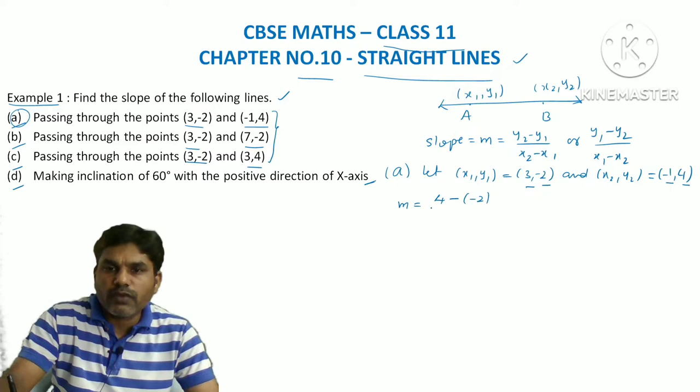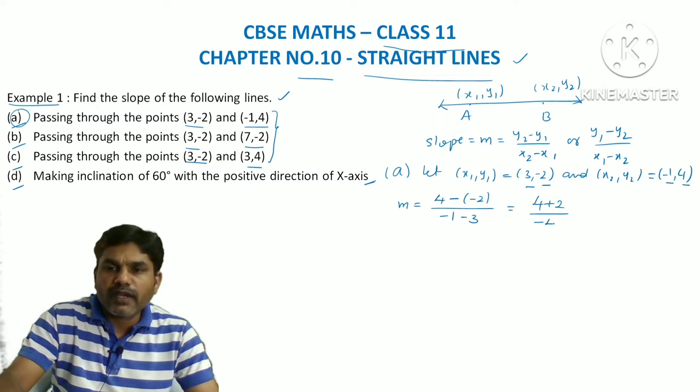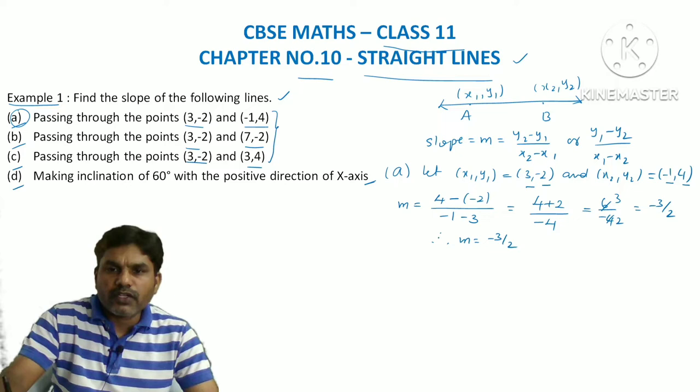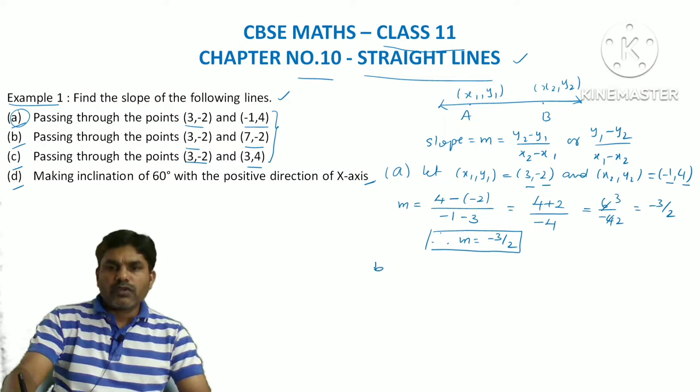So slope m = (4 - (-2)) / (-1 - 3) = (4 + 2) / (-4) = 6 / (-4) = -3/2. Therefore, the slope of the line passing through the given points is -3/2. This is the answer for the first question.